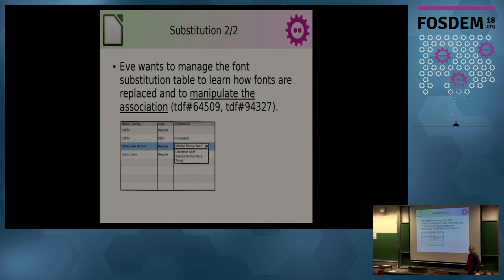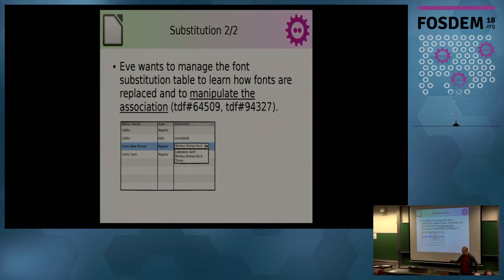Of course, Eve might also want to manipulate the substitution — if she doesn't like how Nimbus replaces Times, she might want to try another font like Liberation or something else. That could be handled with a dropdown list. That covers the substitution area, which we published on the design blog about two years ago, so it's not entirely new.